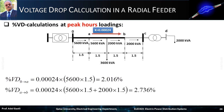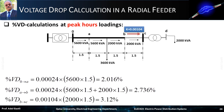Now we proceed with the calculation of the voltage drop from point A to point B. Here the load is not the same along the whole section A to B, but it is divided into two portions: the first 1.5 kilometers portion is handling 5600 kVA, and the next 1.5 kilometers portion is handling 2000 kVA only. So the percent voltage drop from point A to point B equals 2.736%. Moving to the next section B to C, the feeder is different so K is different and equals 0.00104 volts per kVA per kilometer. The length of this section is 1.5 kilometers, so the percent voltage drop is calculated as 3.12%.